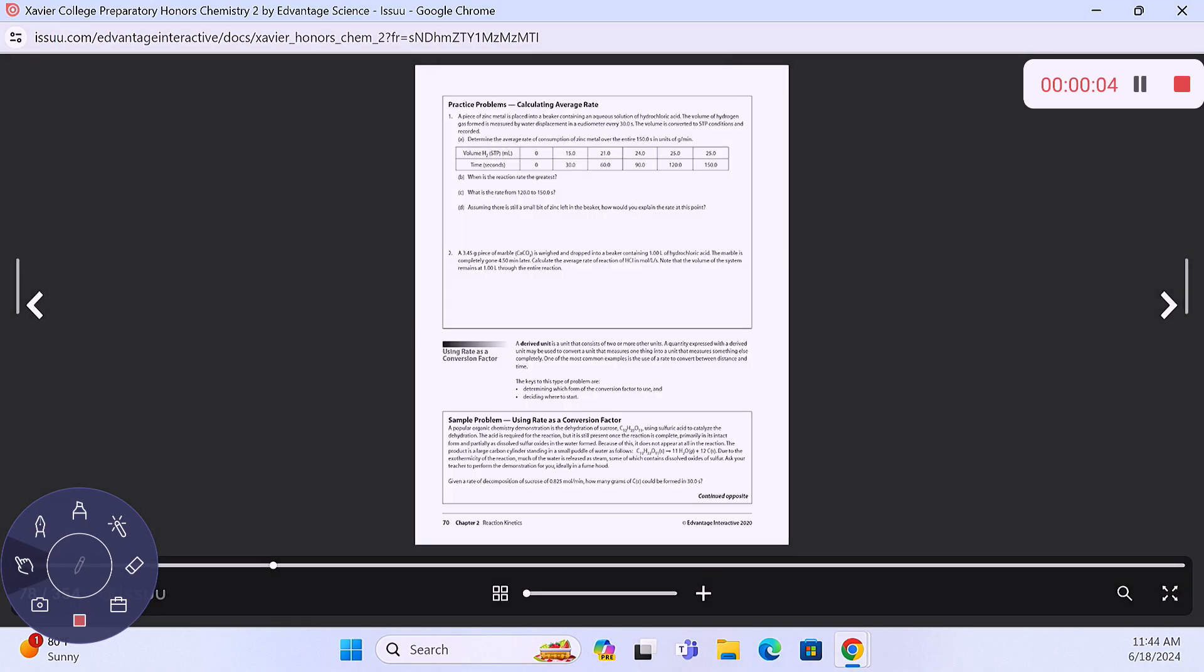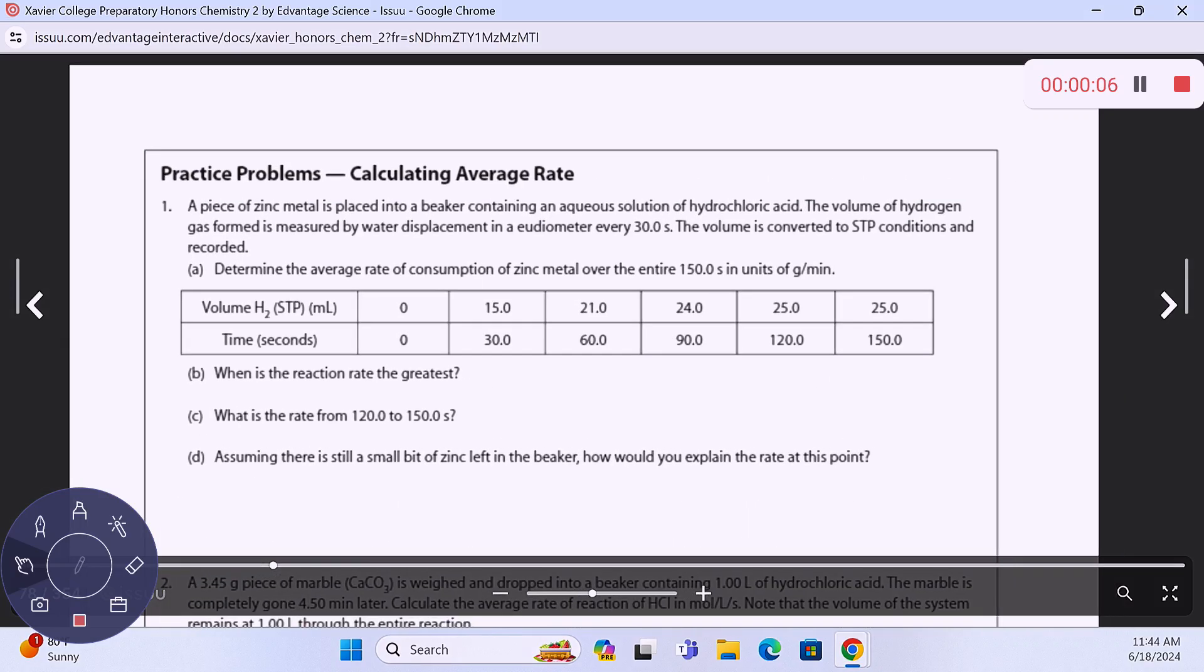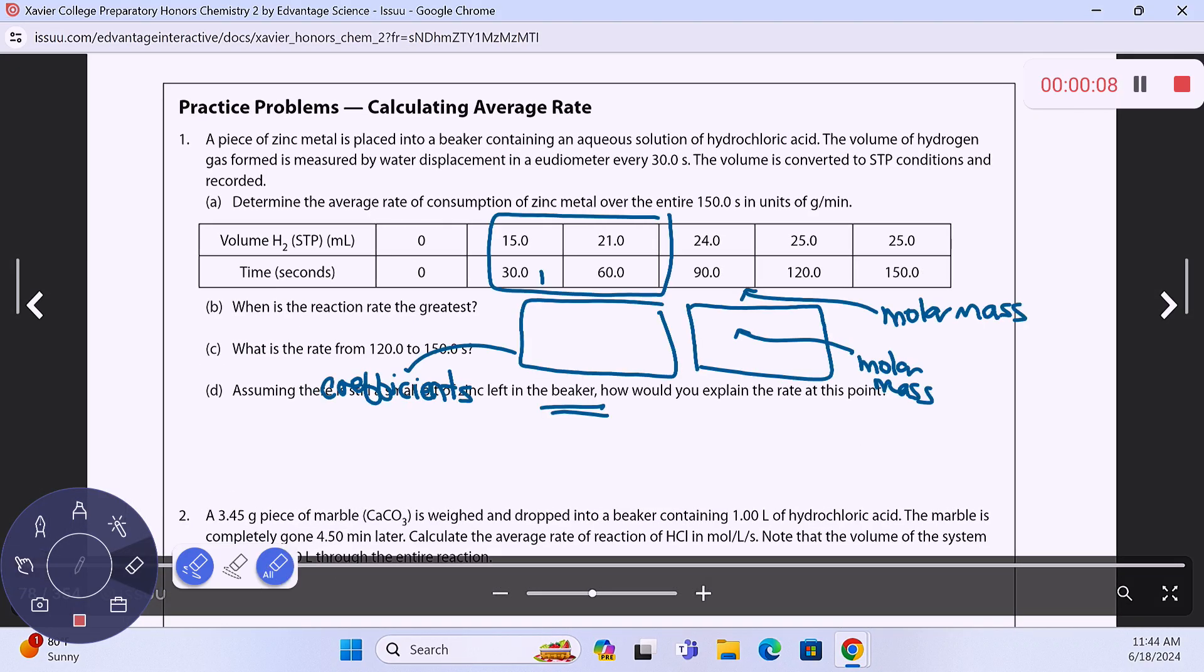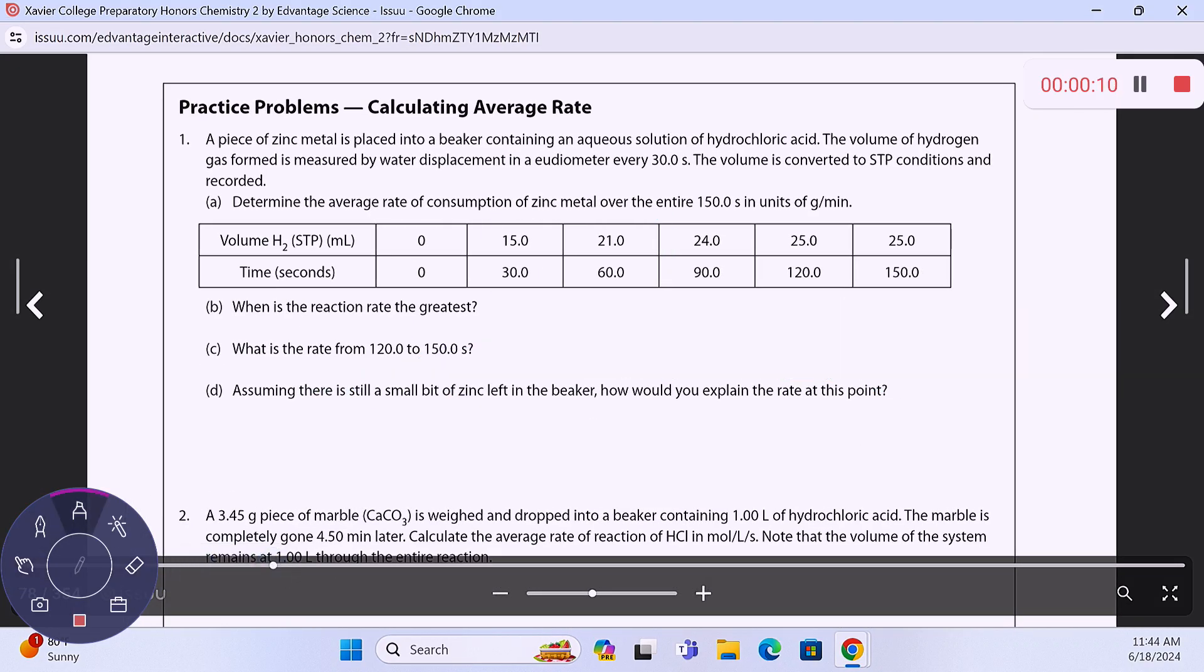So let's take a look here. Number one says we've got zinc metal put in a beaker with hydrochloric acid. We're probably going to need the balanced chemical equation, so let's just write it out now. Zinc plus hydrochloric acid - this is a single replacement reaction. You're going to kick out hydrogen gas and form zinc chloride. You need to put a 2 in front of HCl, and now it's balanced.